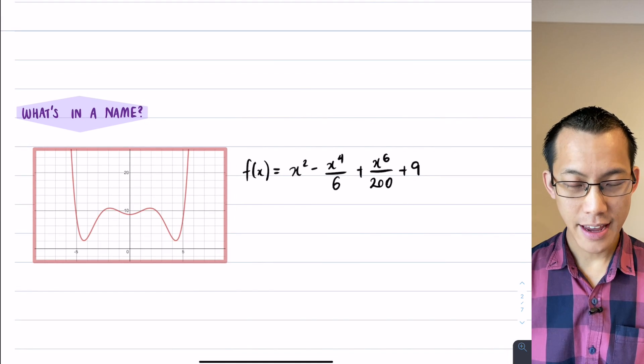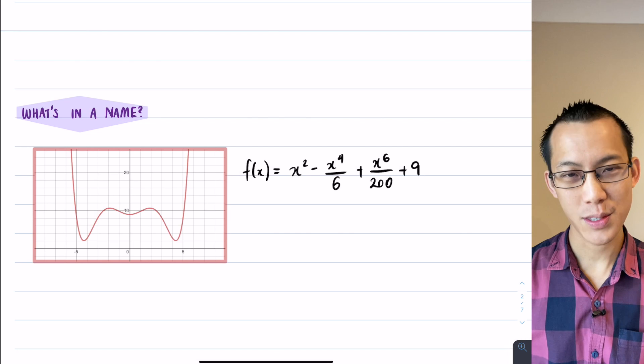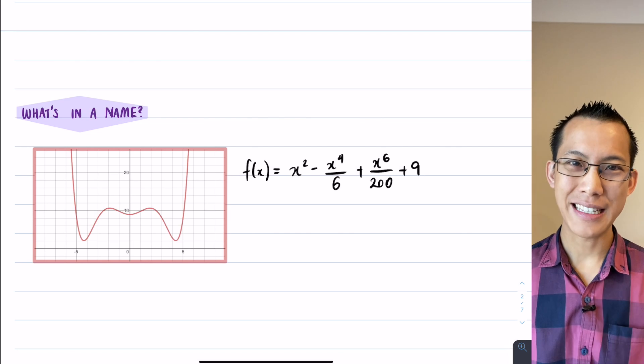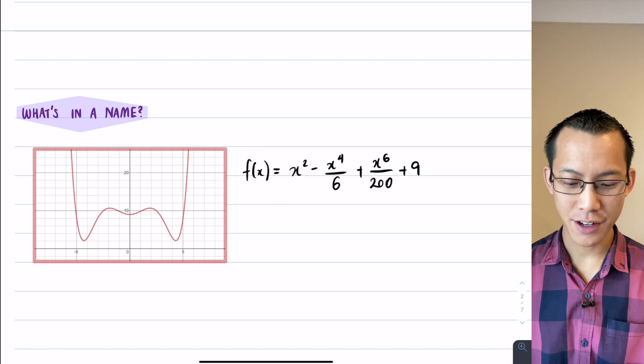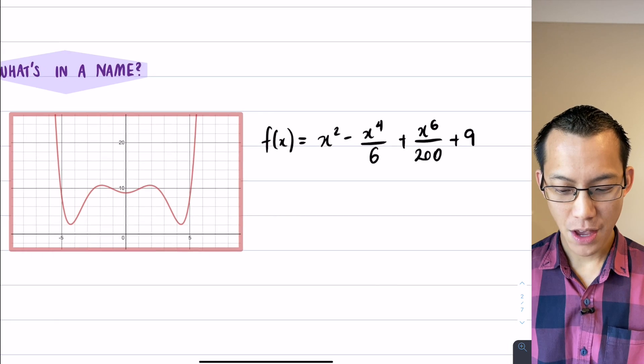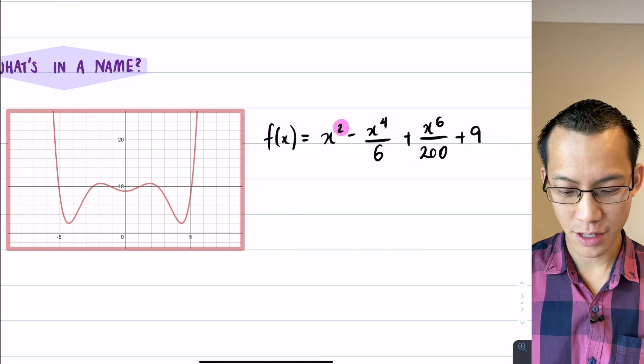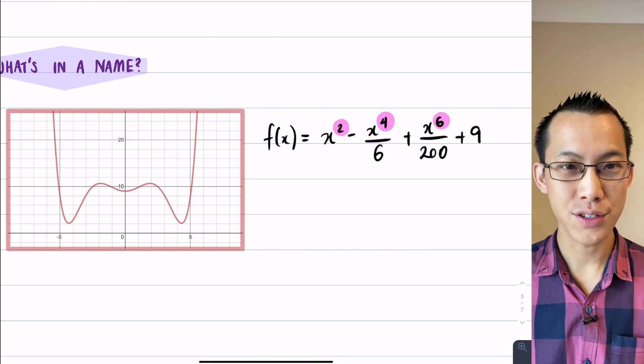Now there's kind of a clue here in the name, and if you have a look closely at the function that I've given you, it's not random. Have a look particularly at the powers. Pay close attention to the indices. You've got an x squared, you've got an x to the power of 4 and an x to the power of 6.